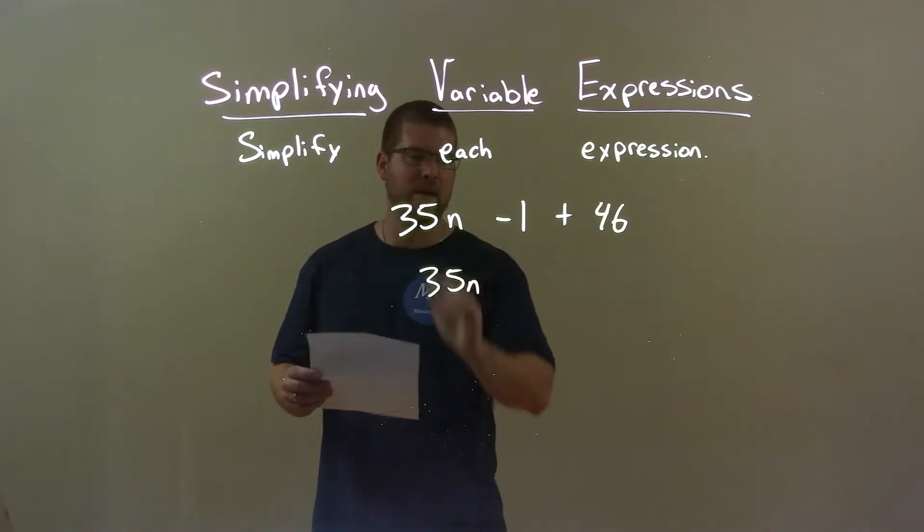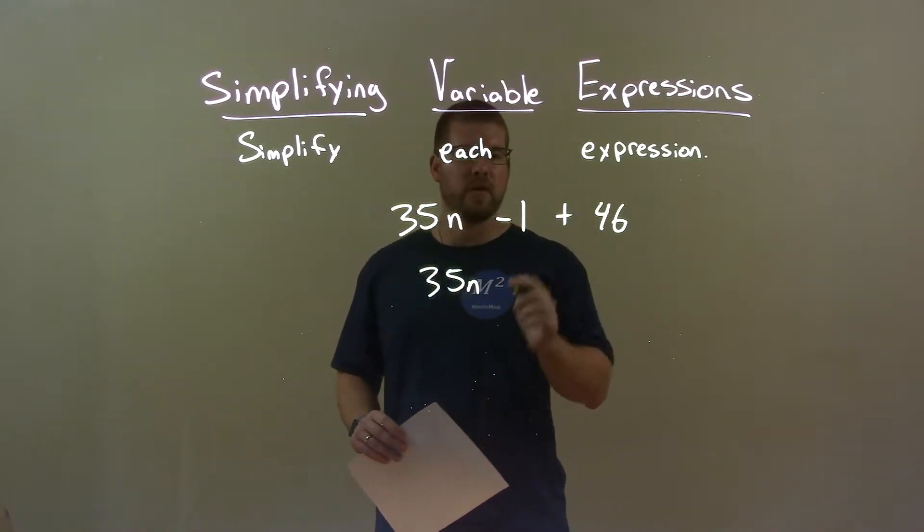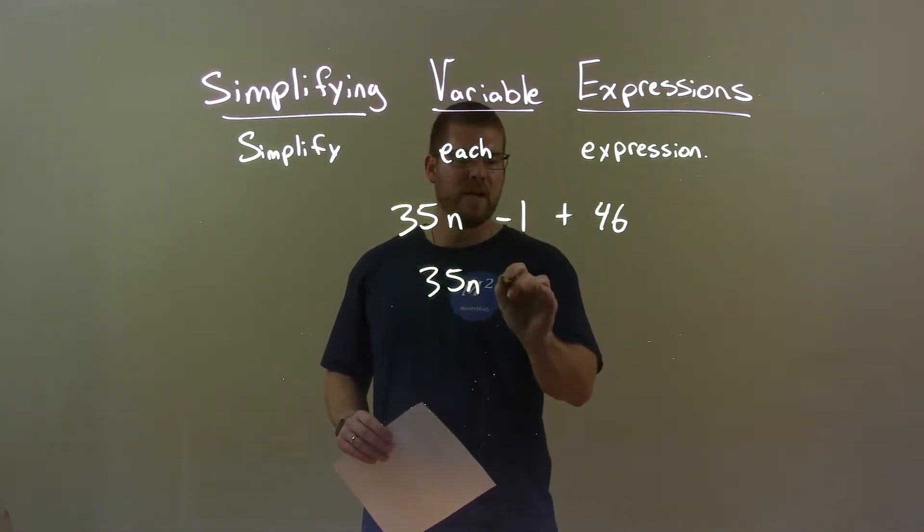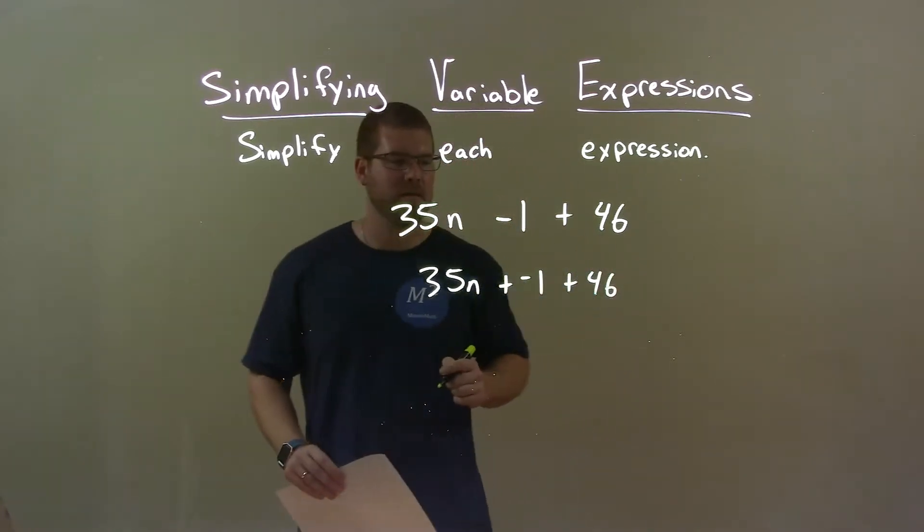So we have 35n, then minus 1 and plus 46. This minus 1 is the same thing as plus a negative 1 plus 46. That might make it a little easier.